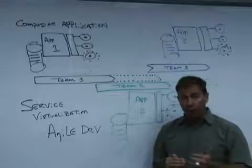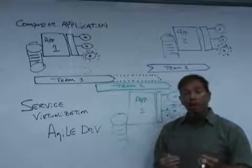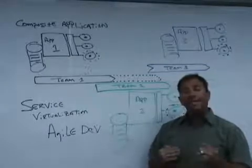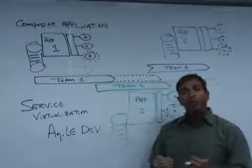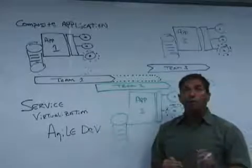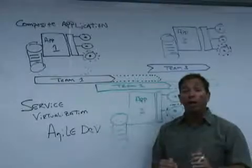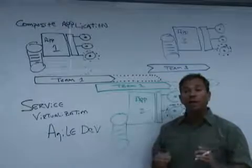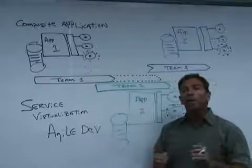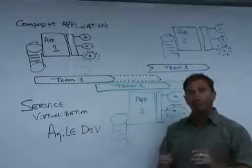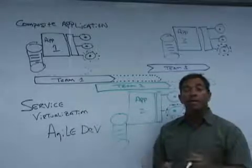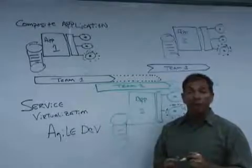If you are using agile, or you are in an agile environment with a composite or service-oriented architecture, and you need to test against multiple dependent systems, you should look up Parasoft Virtualize. Parasoft Virtualize is the answer to the problem of these constraints associated with multiple streams and multiple teams delivering endpoints at different points in time. Look up Parasoft Virtualize at www.parasoft.com.